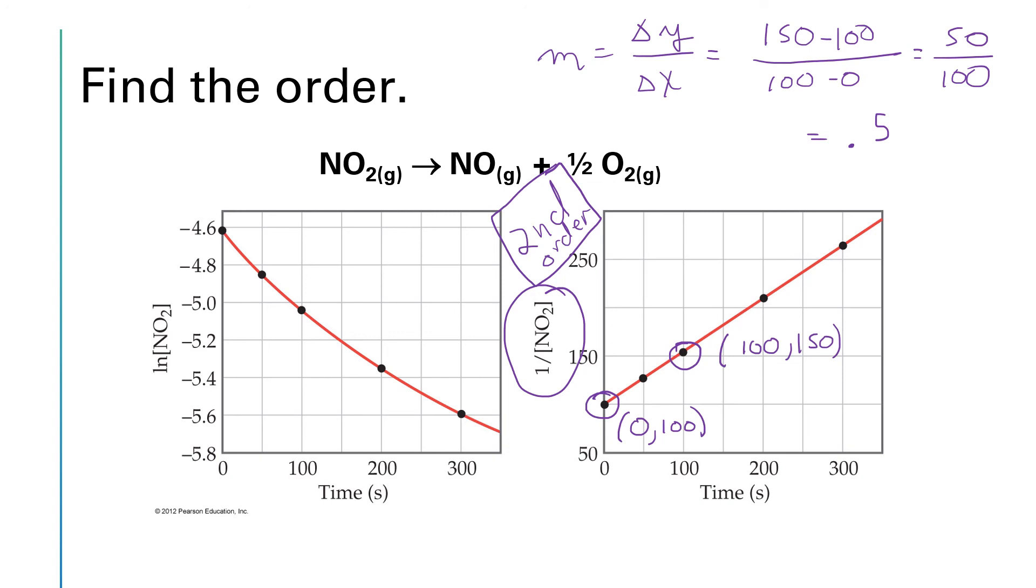So if I was asked to get a value for k, k would be equal to the slope, which is 0.5.